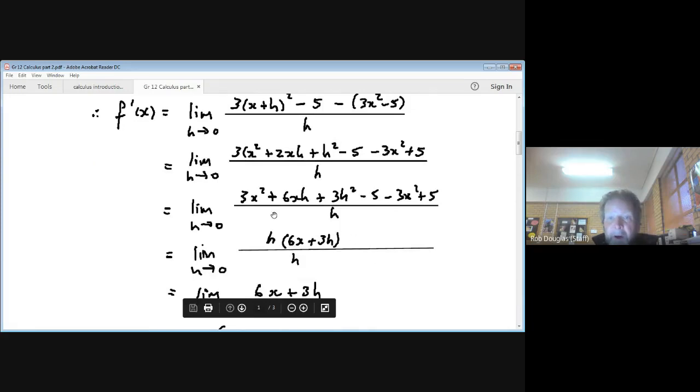Now some things start to cancel. The 3x squared minus 3x squared. The minus 5 plus 5. They all just leave. And you've got 6hx, 6xh plus 3h squared.